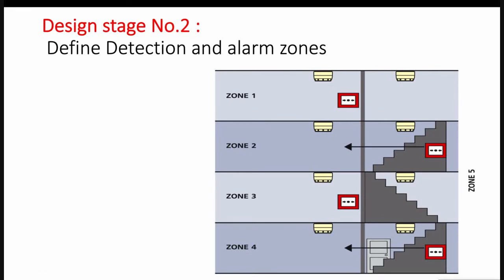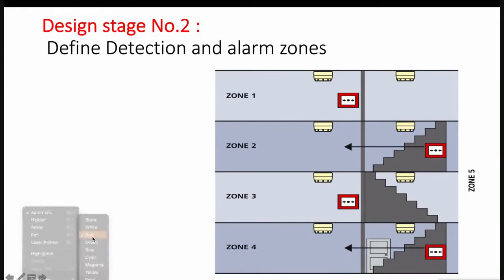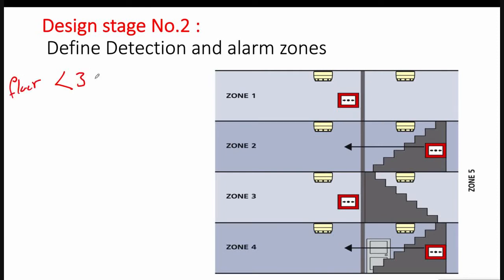It is recommended to assign each floor its own loop or its own zone — whether a loop or a zone. Each floor should have its own loop or zone, unless the area of the floor is less than 300 square meters.